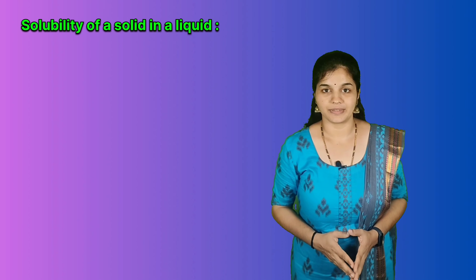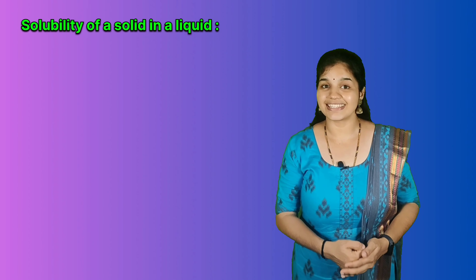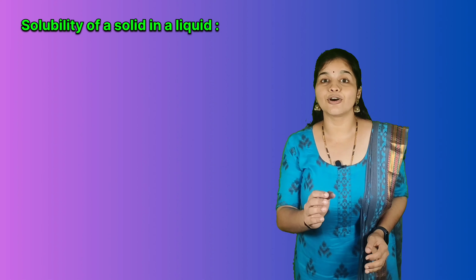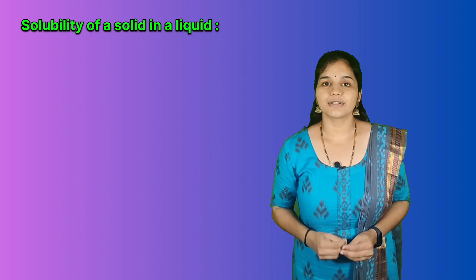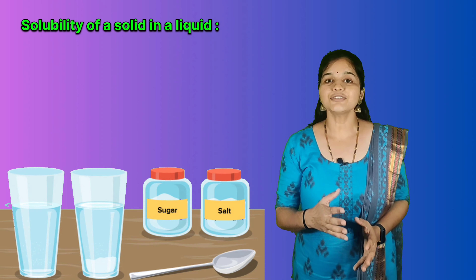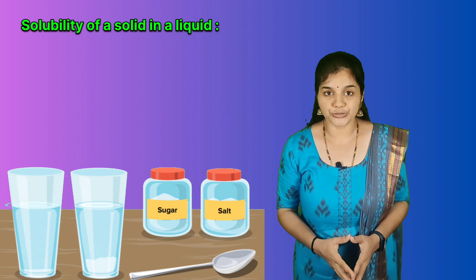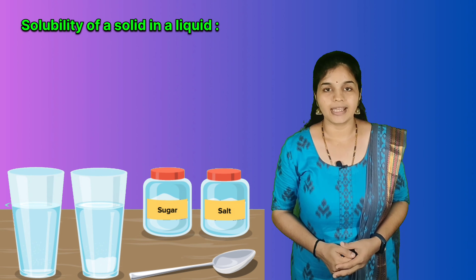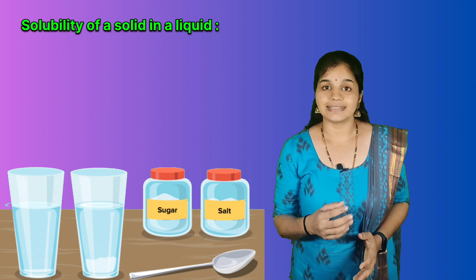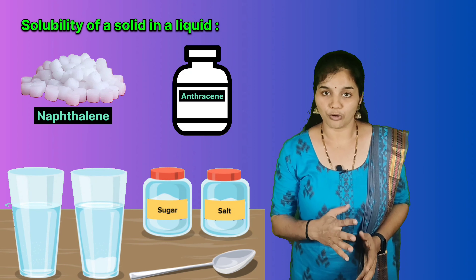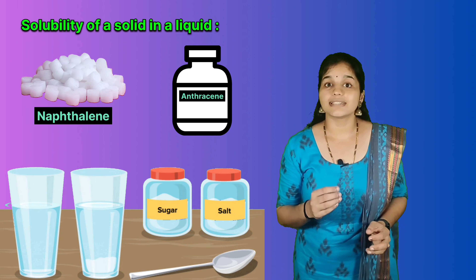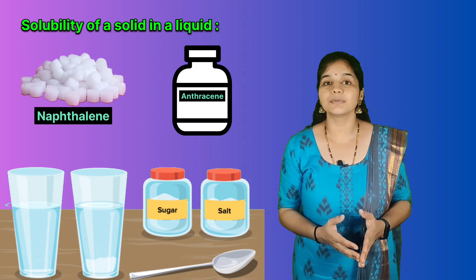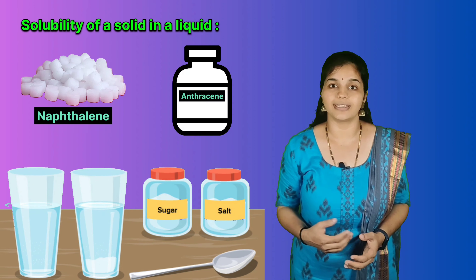Firstly, we shall consider the solubility of a solid in a liquid. An important thing to note is that every solid does not dissolve in a given liquid. For example, sodium chloride and sugar dissolve easily in water. However, naphthalene and anthracene do not dissolve in water. On the other hand, naphthalene and anthracene dissolve readily in benzene, but sodium chloride and sugar do not dissolve in benzene.